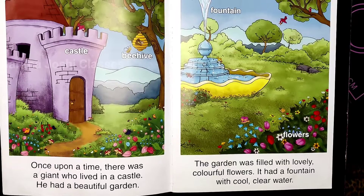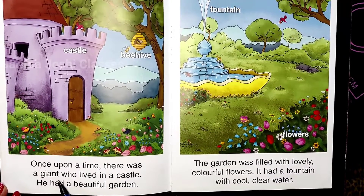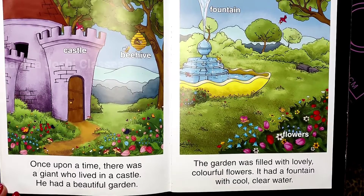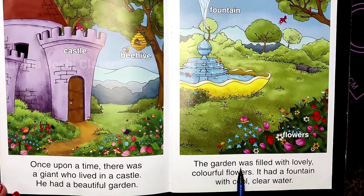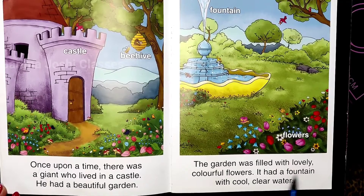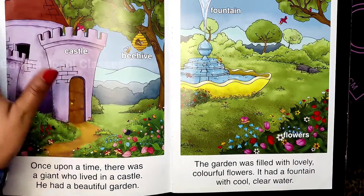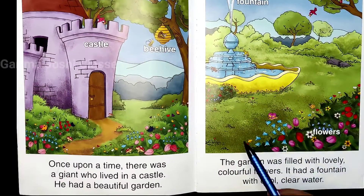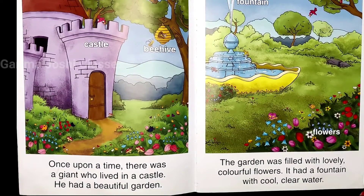The Selfish Giant. Once upon a time there was a giant who lived in a castle. He had a beautiful garden. The garden was filled with lovely colorful flowers and it had a fountain with cool, clear water. The giant was living in a castle with a beautiful garden that had flowers and a fountain.